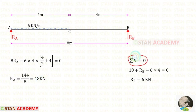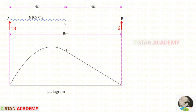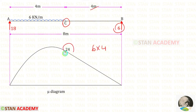Now using the rule ΣV = 0, we can find RB, which is 6 kilo newton. Now we have to draw the bending moment diagram. I have drawn the bending moment diagram for this simply supported beam. To find the ordinate at point C, we multiply RB by the distance 4: 6 × 4 = 24.